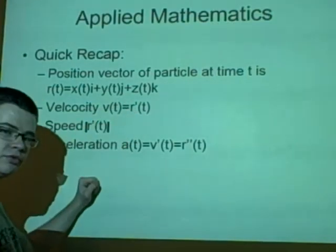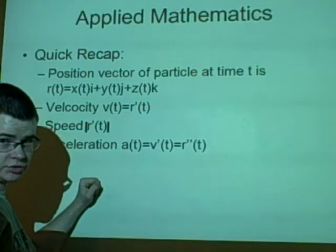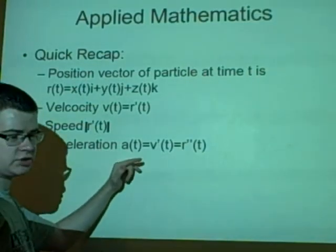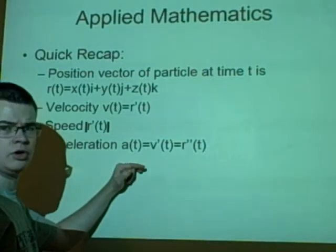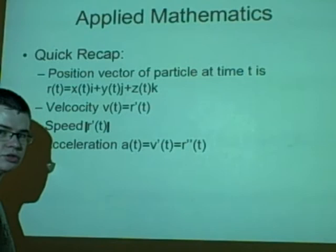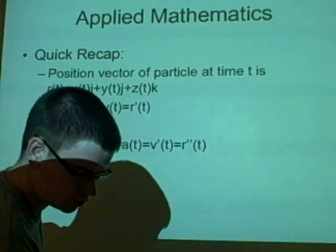To get the speed we find the modulus of the velocity. And to get the acceleration it's the differentiation of the velocity or the second derivative of the position vector. That's all we're going to go through for the first few slides.